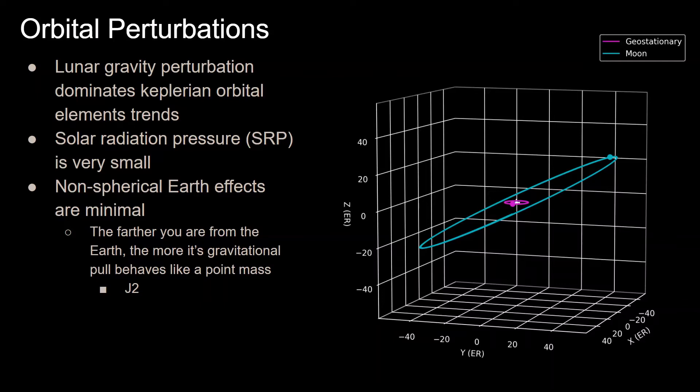The largest perturbation, and what dominates the change in orbital elements, is the gravitational pull due to our Moon. On the plot on the right, you can see the orbit of the Moon, which is inclined quite a bit with respect to the surface of the Earth, and the gravitational pull from the Moon is going to pull on the spacecraft here that is in the geostationary orbit.